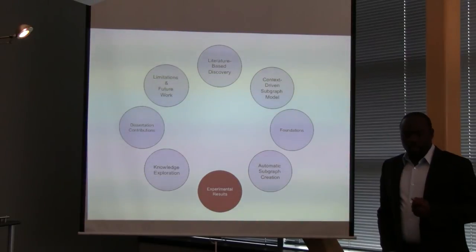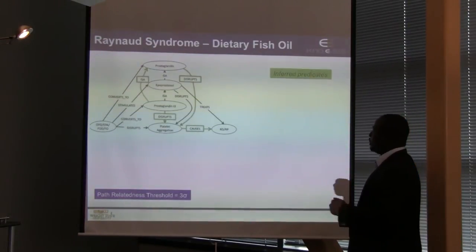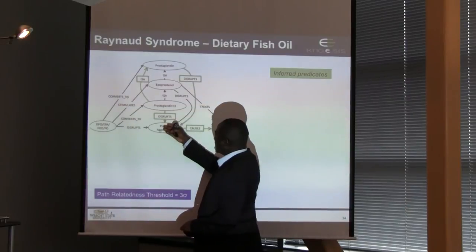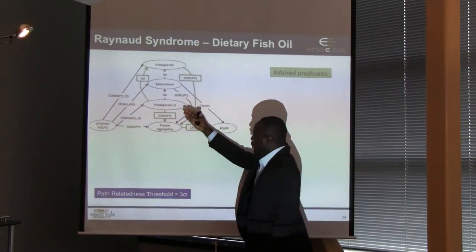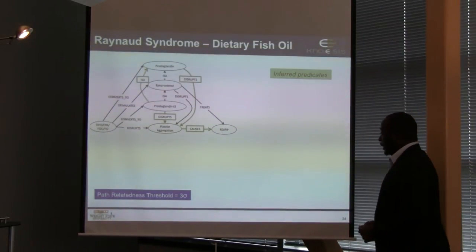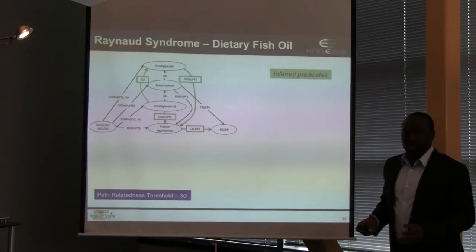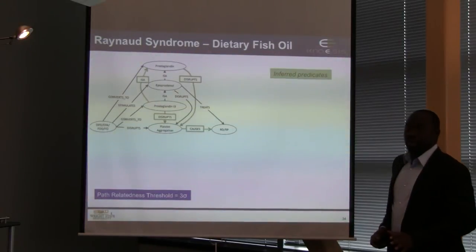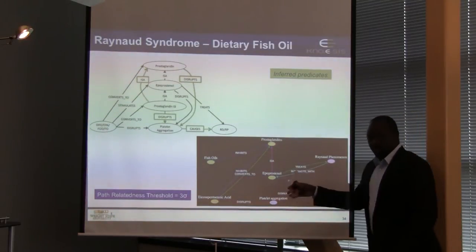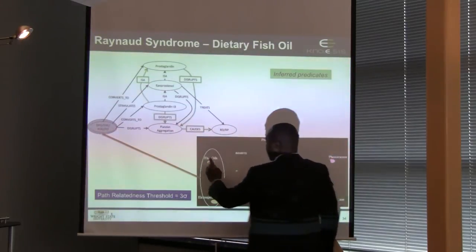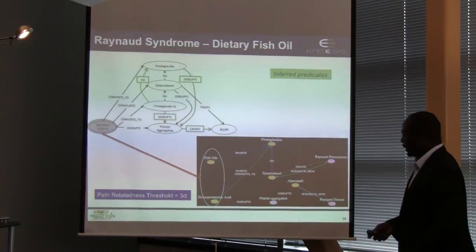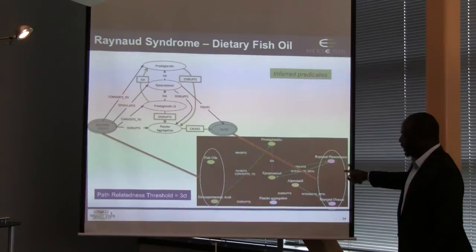Returning to the manually created subgraph from our JBI article — a complex association with platelet aggregation and prostaglandins disrupting platelet aggregation as the mechanism for treating Raynaud syndrome — at the third standard deviation threshold I generated one subgraph, while at the second standard deviation I generated four subgraphs. In the resulting subgraph we see fish oils and icosapentaenoic acid, Raynaud phenomenon and Raynaud disease, platelet aggregation with the 'disrupts' relationship as manually assembled, and triples showing epiprostanol as a prostaglandin and alprostadil (PGE1) disrupting platelet aggregation. Alprostadil is PGE1 and epiprostanol is PGI2 — both in the prostaglandin family.